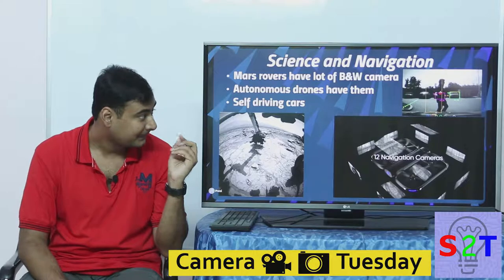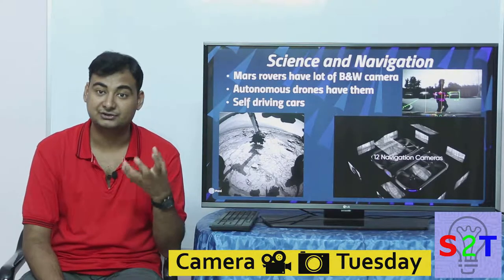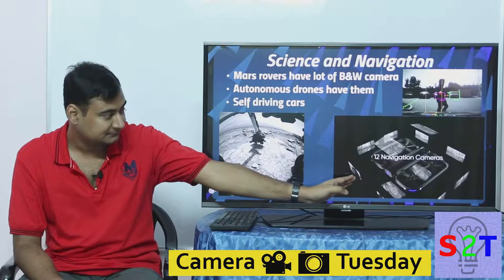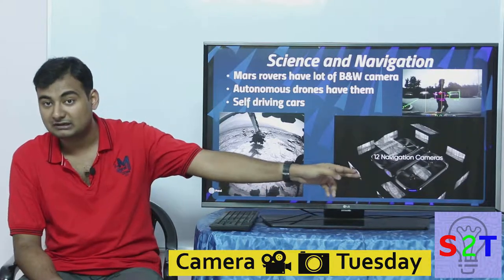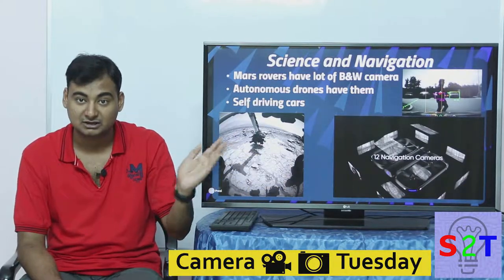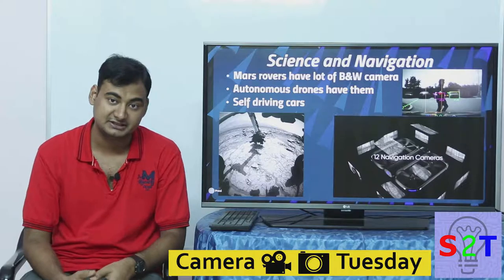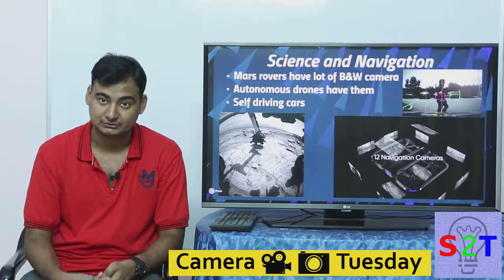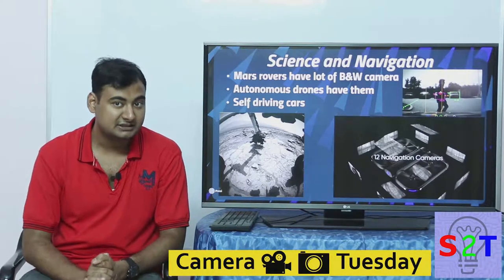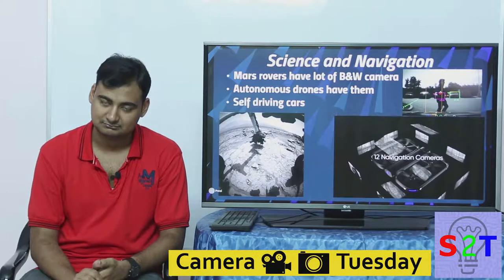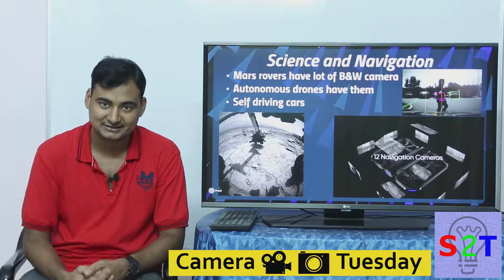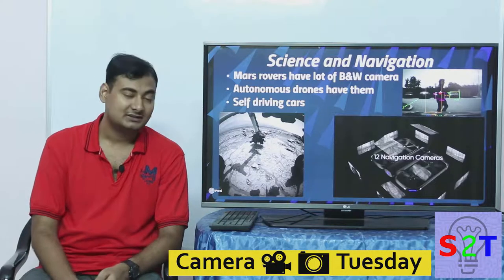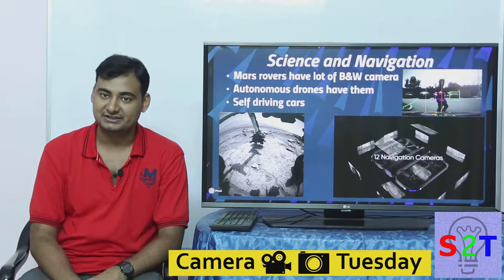Faster processing speed is quite crucial for self-driving cars and rovers. Now we also have autonomous photographic drones coming to market — they use navigation cameras. Imagine using two color cameras: the data throughput needed for the processor would be too high. So black and white cameras have a lot of use in our modern day-to-day life — don't count them out just yet.